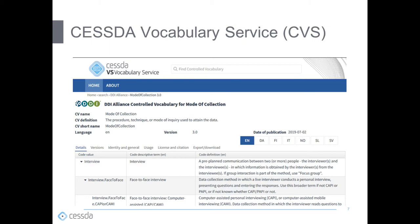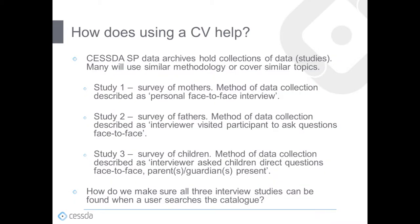Providing access to term definitions to people who are creating study and data descriptions — that is to say metadata — is important because the definitions define the scope of vocabulary terms. They ensure uniform and consistent use of the terms across SESTA. Terms alone can be interpreted differently, but the definitions consolidate the meaning.